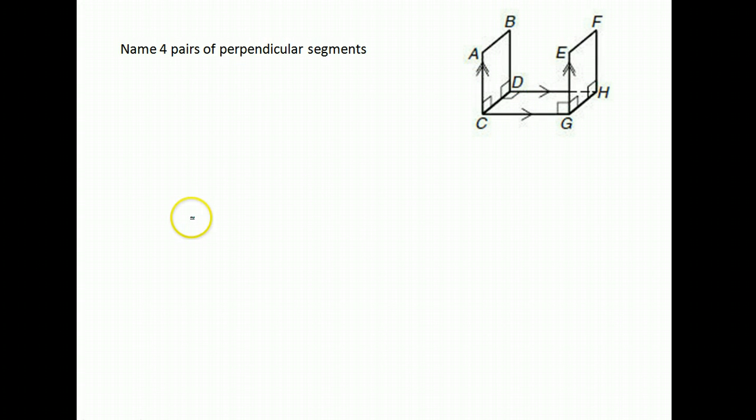On this one we want to name four pairs of perpendicular segments. Now perpendicular, remember, is marked on a figure with this little square in the corner. So there's one pair right there wherever these two come together. AC and CD are perpendicular. So AC is, here's our symbol for perpendicular, perpendicular to CD.